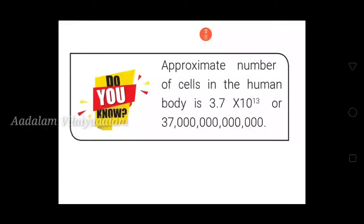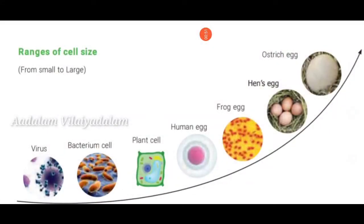The range of cell sizes from small to large includes: virus, bacterium, plant cell, human egg, frog cell, hen's egg, and at the largest end, the ostrich egg. This is the range of cell sizes.